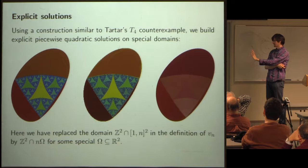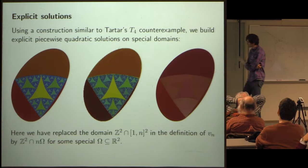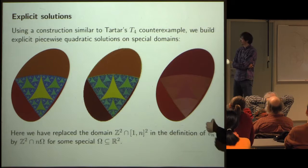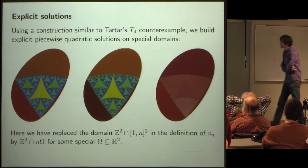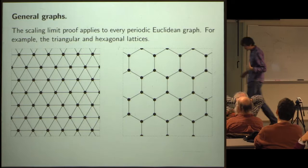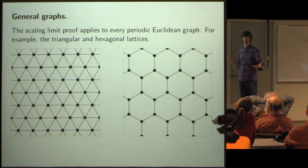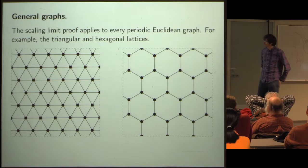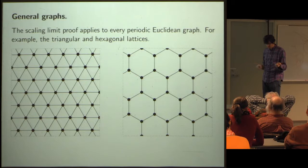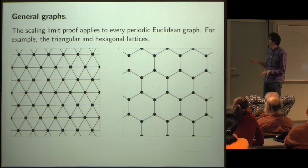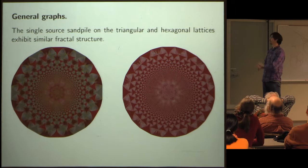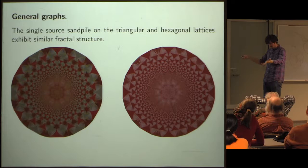This is essentially all we know about the square lattice — the state of the art as of about a year ago, much of which Lionel may have already covered. The scaling limit proof works on any periodic Euclidean graph, so in particular it works on the triangular lattice and the hexagonal lattice, and the algorithm for estimating the corresponding gamma sets also works.